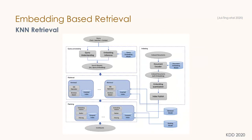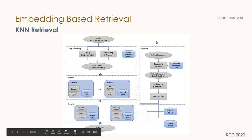A recently published Facebook paper on KNN retrieval shows the full pipeline: a query containing text, search, and context information goes through query understanding and embedding inference to produce a query embedding. On the retrieval side, a retrieval model based on an inverted index offers nearest neighbor and boolean match operators, returning the most relevant documents for ranking. The index process involves document encoding, embedding indexing, quantization, and pushing the result into the index.